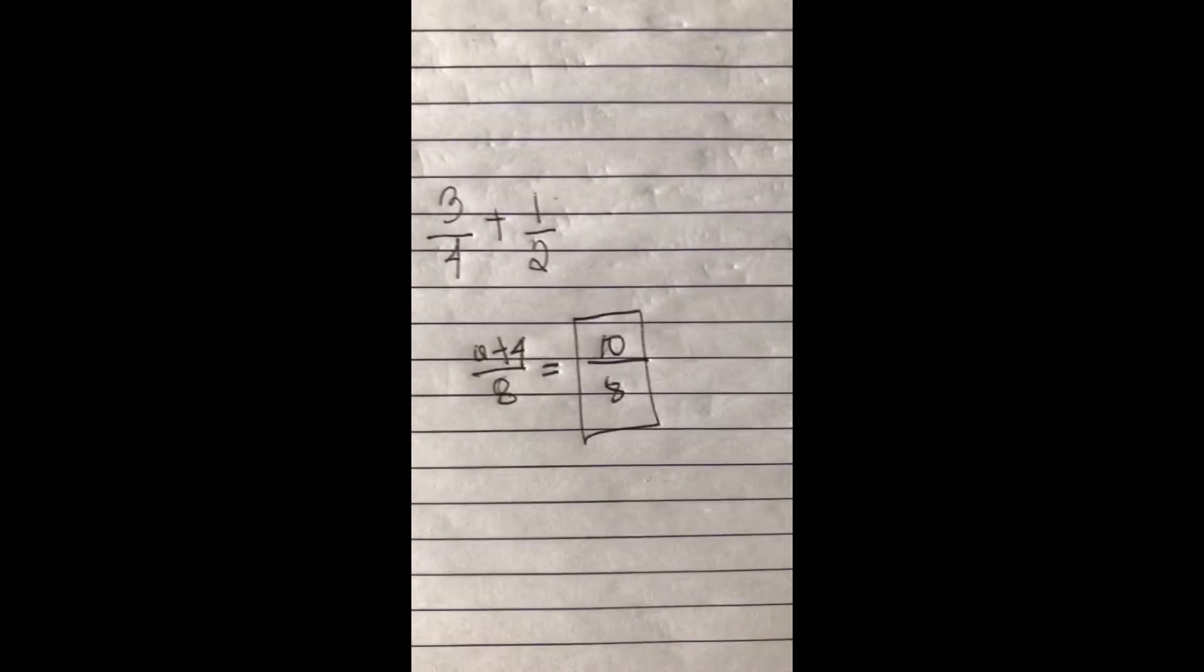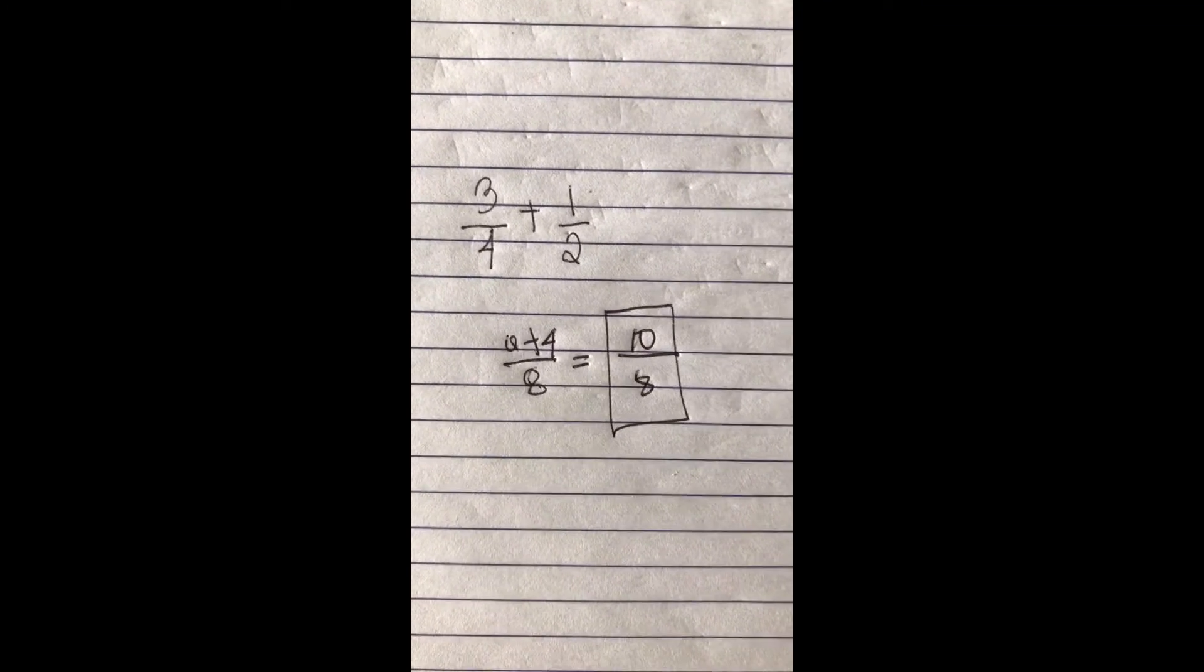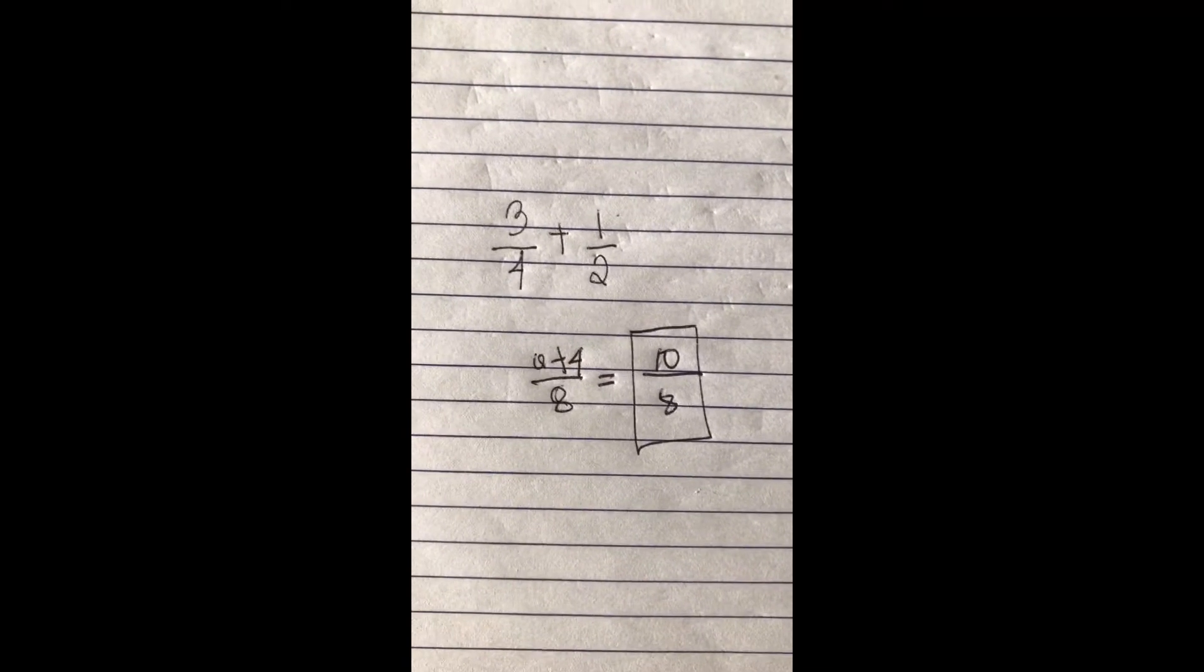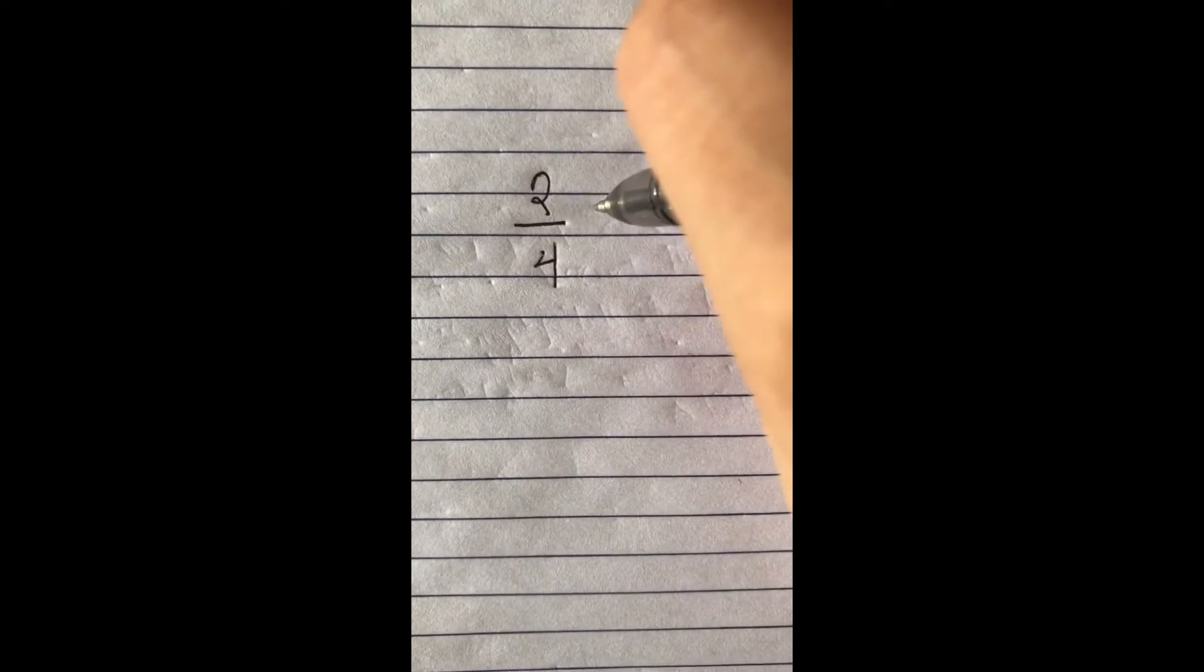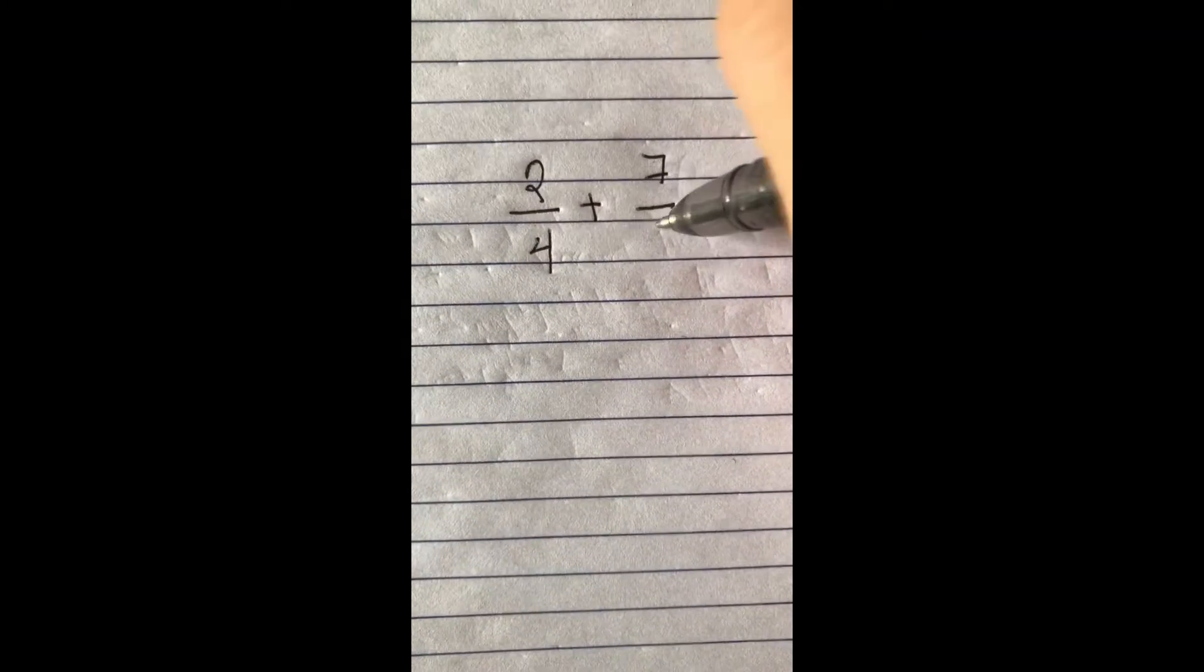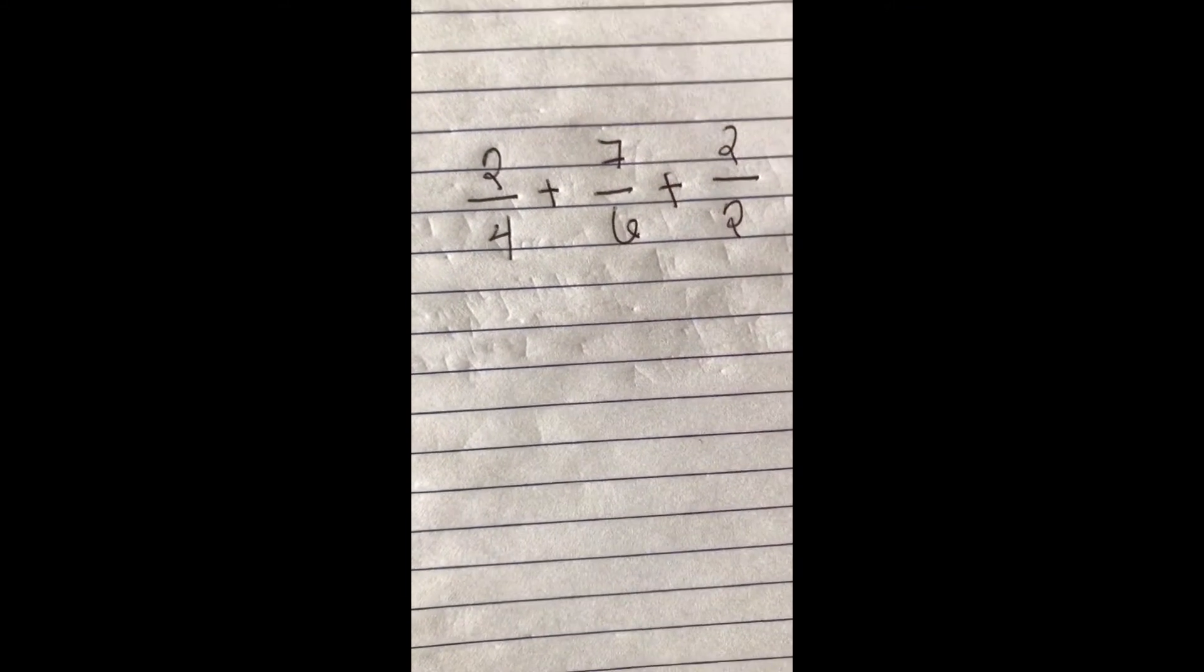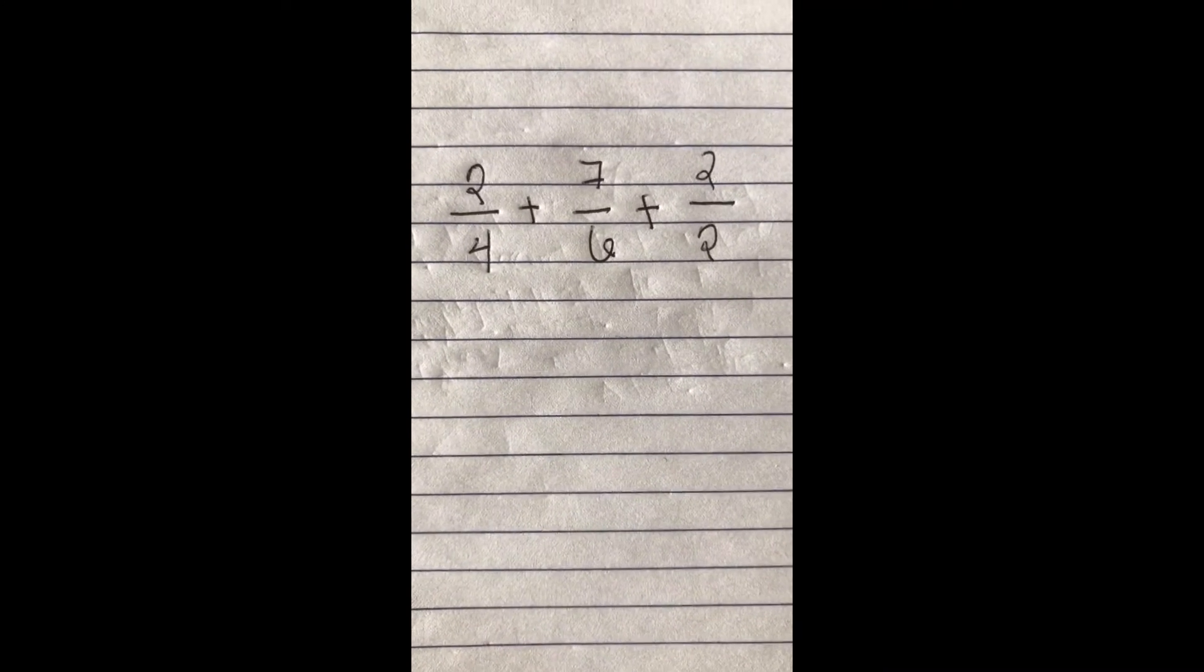Now I will give you another example by following the steps of adding fractions. Let's have 2 over 4 plus 7 over 6 plus 2 over 2. So in step 1, find the least common multiple or LCM of the denominators.